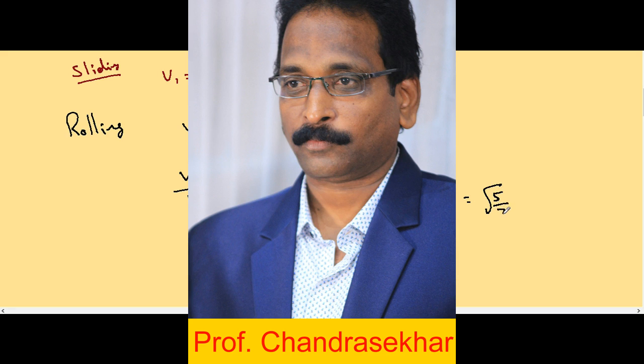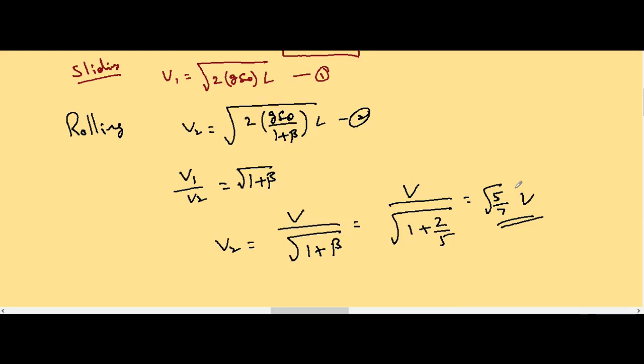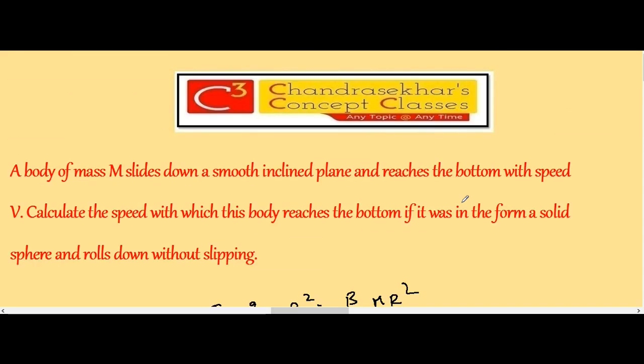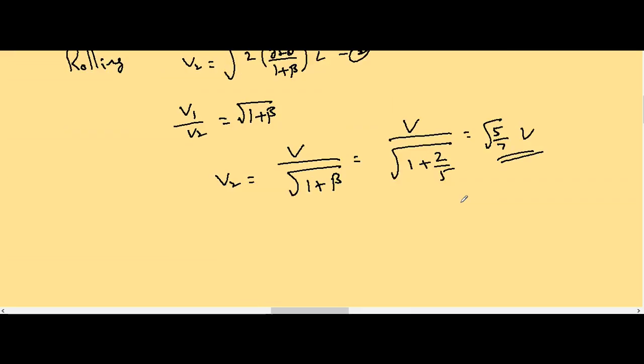We know β = 2/5 for a solid sphere, so 1 + β = 1 + 2/5 = 7/5. Therefore V2 = v / √(7/5) = v · √(5/7). The speed gained by the rolling solid sphere when it reaches the bottom is √(5/7) · v.